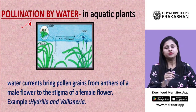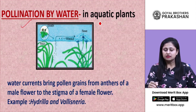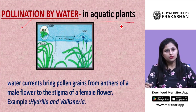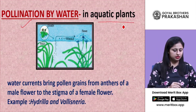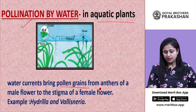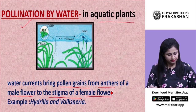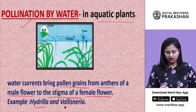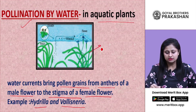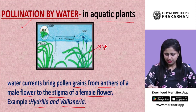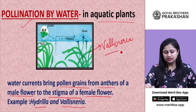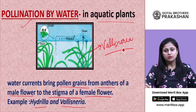Pollination by water occurs in all aquatic plants — those which are present in or grow in water. Water currents bring pollen grains from the anthers of a male flower to the stigma of the female flower. Examples are hydrilla and vallisneria. The image shows vallisneria, an aquatic plant in which pollination is carried out with the help of water.